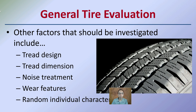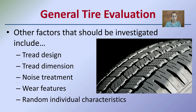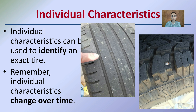General tire evaluation: other factors that should be investigated include the tread design, tread dimensions and noise treatments, potential wear features, and random individual characteristics. It could be a damage point in the tire or even a small stone caught in the tire, because that can lead us to individual characteristics that help identify an exact tire. Individual characteristics can change over time, which is why it's important to match as close as possible. It could be a refilling point, a plug point, a nail in the tire, different wear marks, different cracks, or something unique wedged in the rubber. These individual characteristics can really help solidify an argument that that tire was present at the particular scene documented.